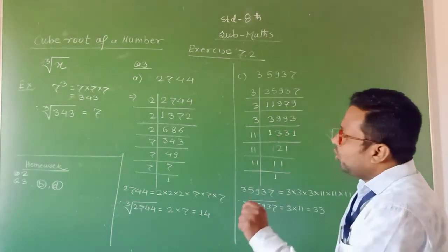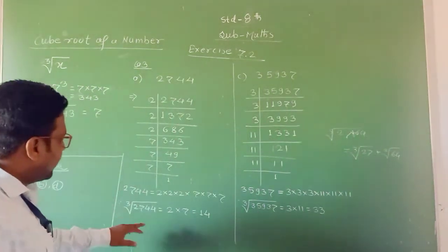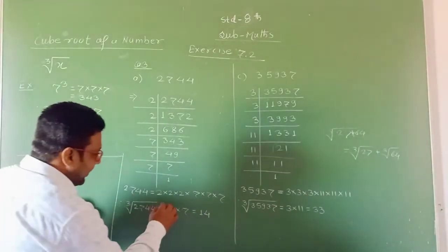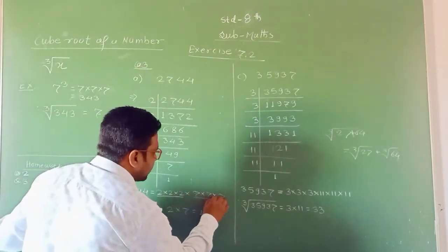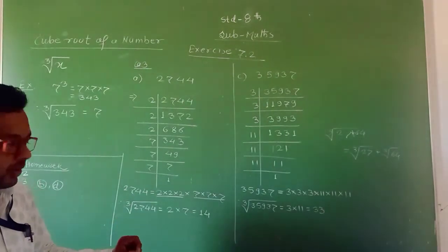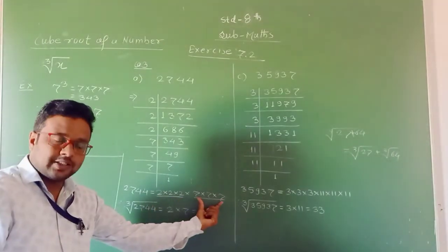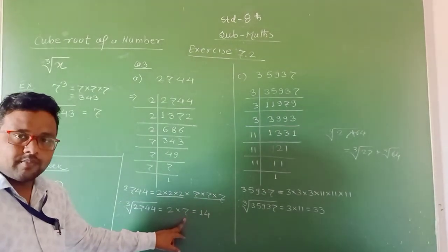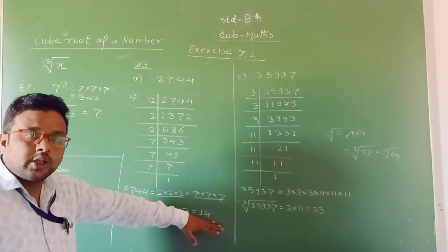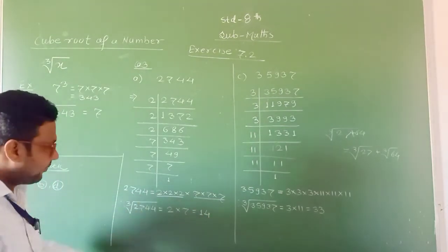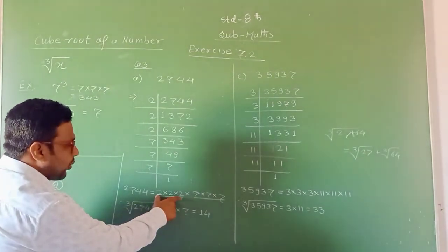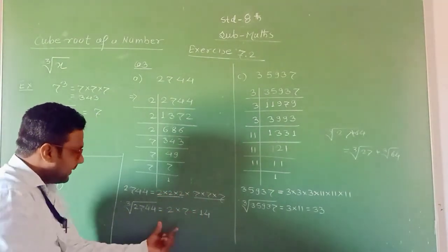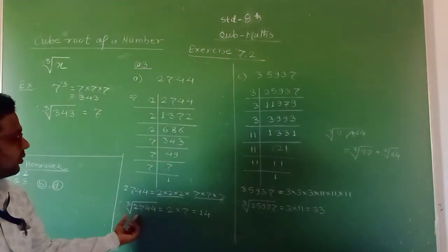These are the prime factors. To find the cube root of 2744, we take the prime factors in groups of three. There is a group of three 2s and a group of three 7s. Out of the group of three 2s, we take one — which is 2. Out of the group of three 7s, we take one — which is 7. Their multiplication is 14, which is the cube root of 2744. This is very easy.